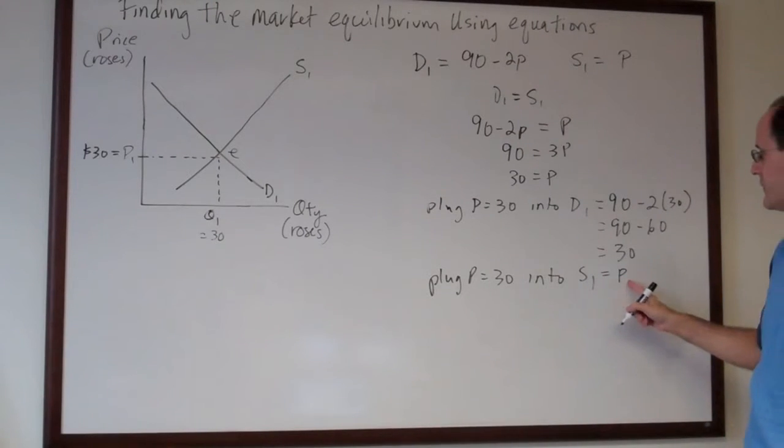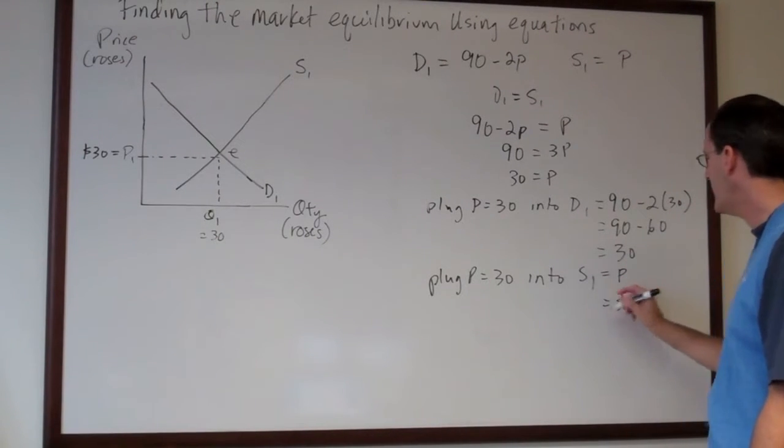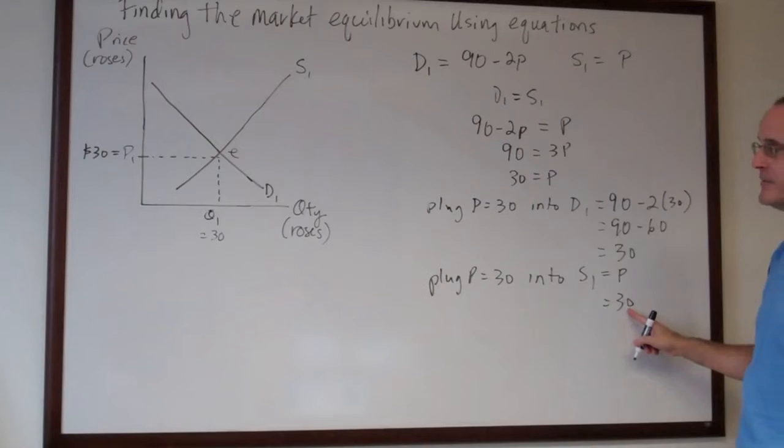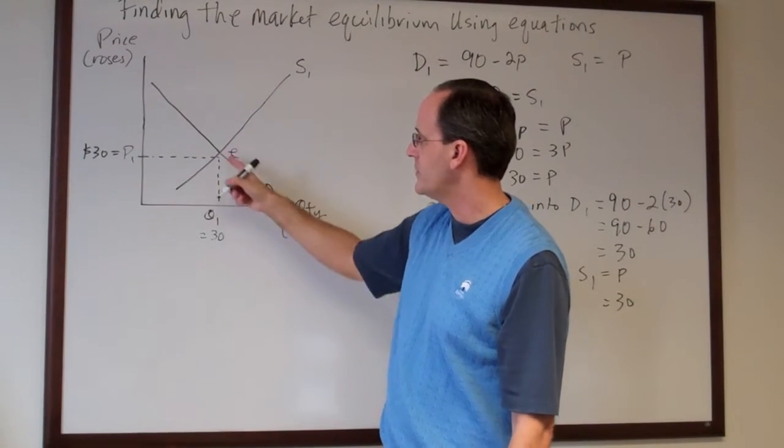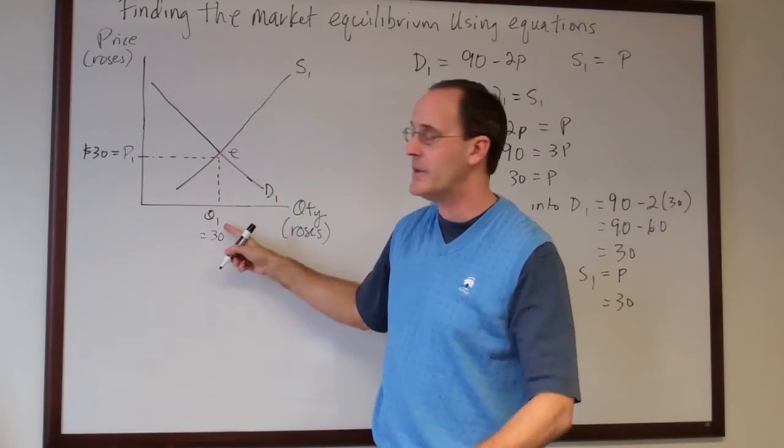S1 up here is just the price. So when we plug 30 in for the price we get S1 is also equal to 30. And of course that should make sense to you because the quantity supplied should also be equal to the quantity demanded when we get Q1.